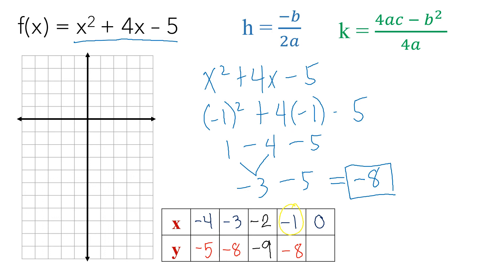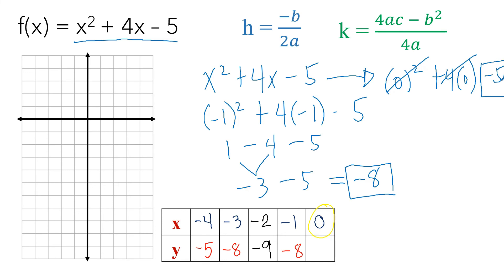Last, substitute x equals 0 into the equation. It becomes 0 squared plus 4 times 0 minus 5. Zero squared cancels, 4 times 0 cancels, so we only have negative 5 as the last value of y.